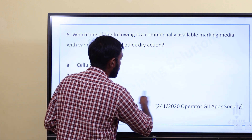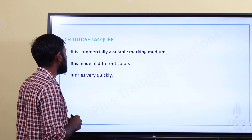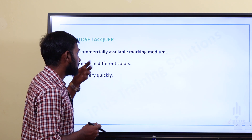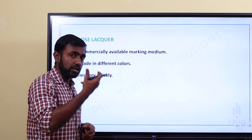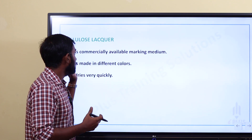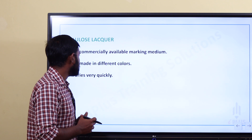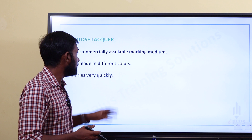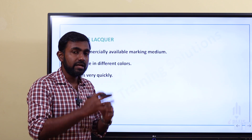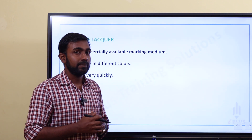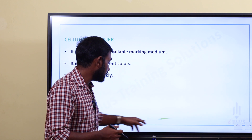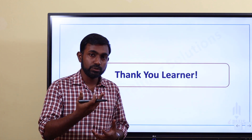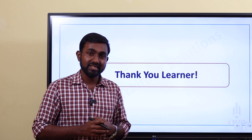Cello lacquer is a commercially available marking media. It is made in different colors and dries very quickly. That is why Cello lacquer is the correct answer. We will continue with the next class. Bye.